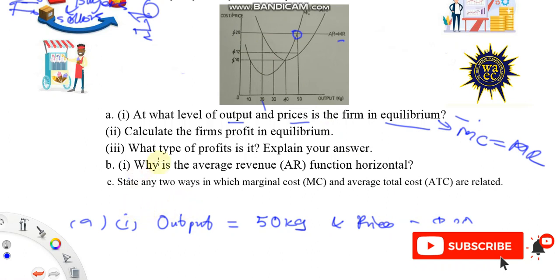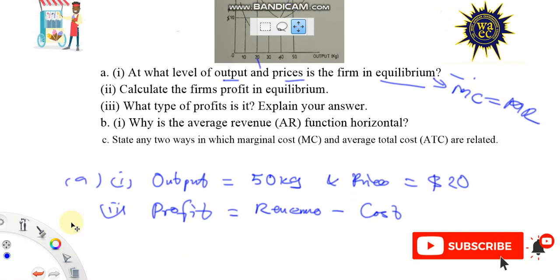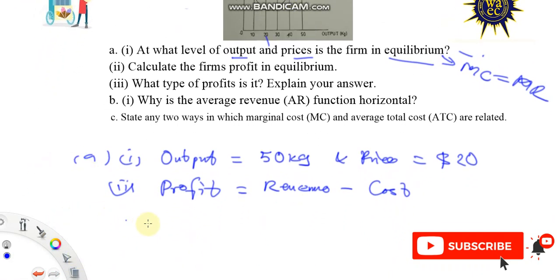And then in Roman 2, we've been asked to calculate the firm's profit. Remember, profit really is revenue minus cost. You sell something, you take out how much it costs you to produce it, and then you have your profit.